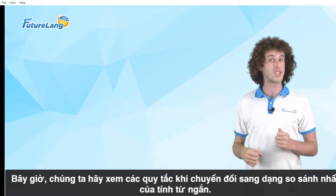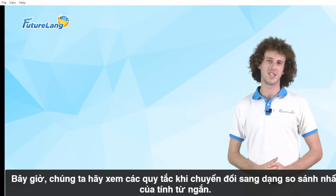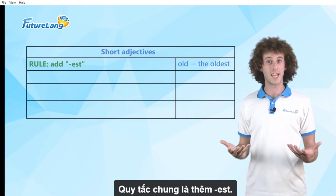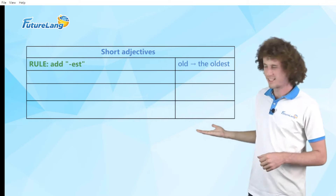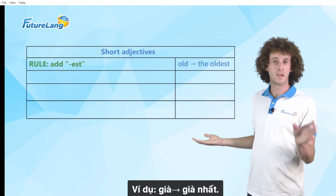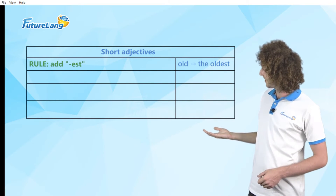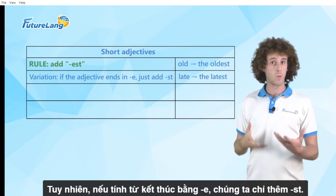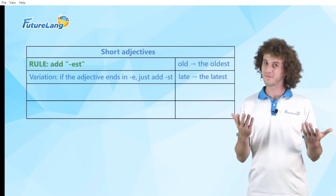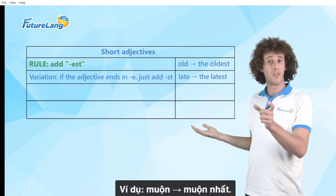Now let's see the rules when converting to superlative form of short adjectives. The general rule is add EST. For example: old, the oldest. However, if the adjective ends in E, we just add ST. For example: late, the latest.